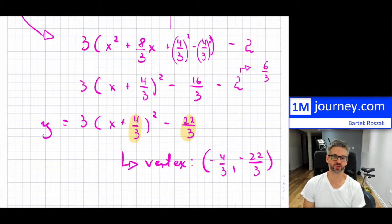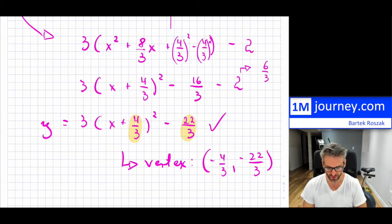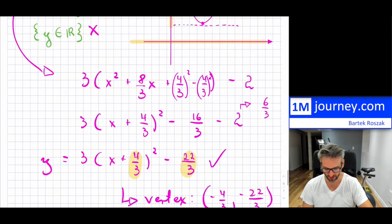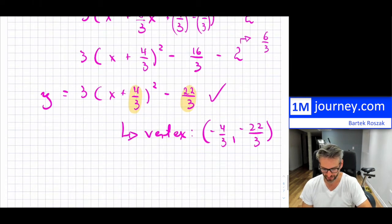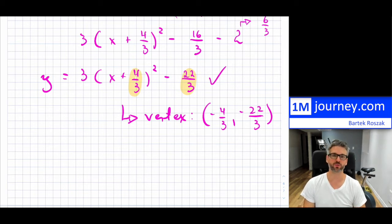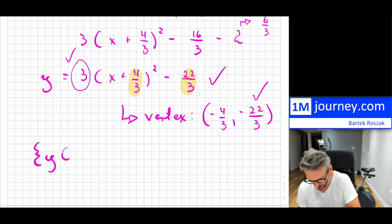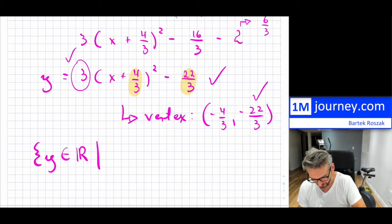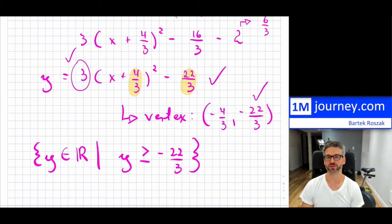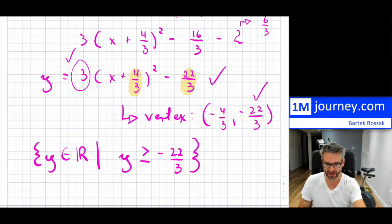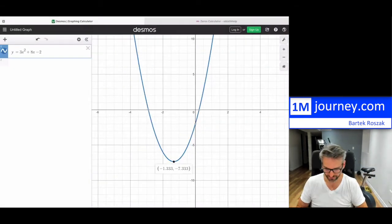After completing the square, the vertex is at (−4/3, −22/3). It's not exactly how I sketched it — it's shifted into that quadrant. Since the parabola opens upward, the minimum is at y = −22/3. So the range is y ∈ ℝ where y ≥ −22/3. Let me plot this so you can see it.